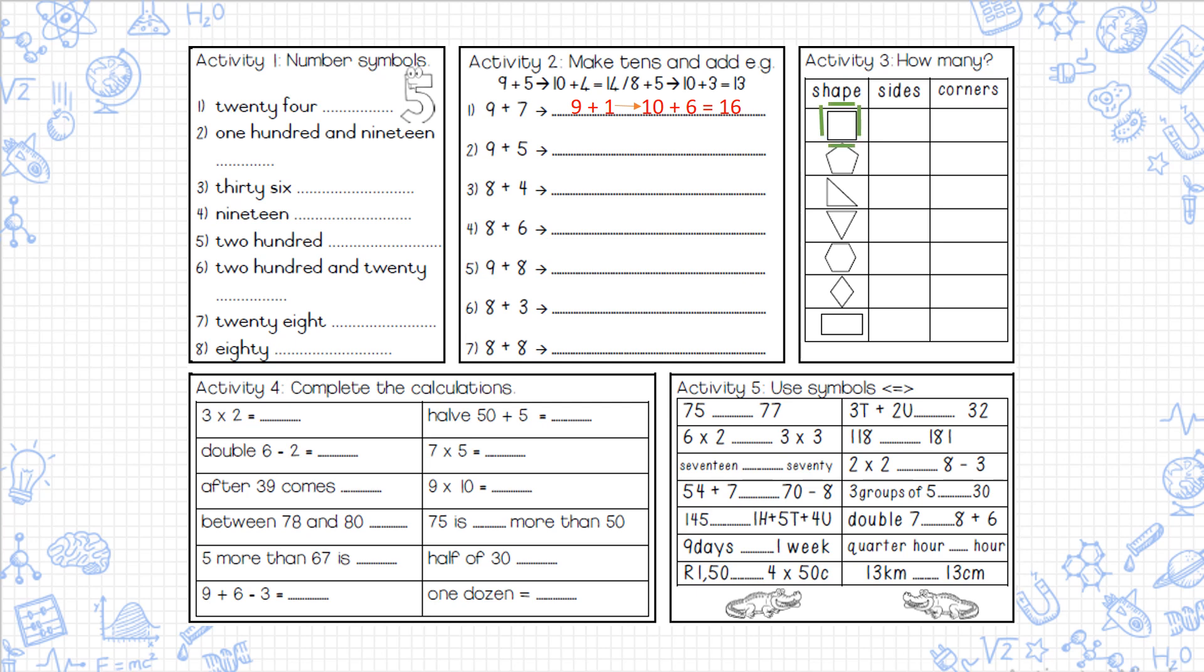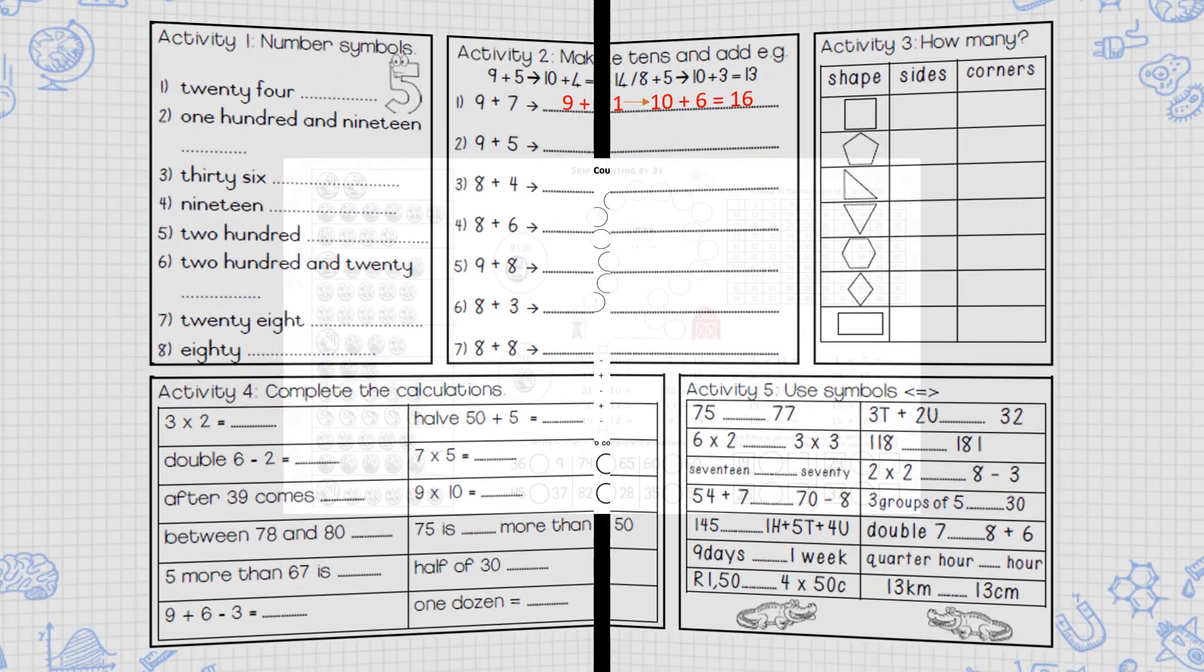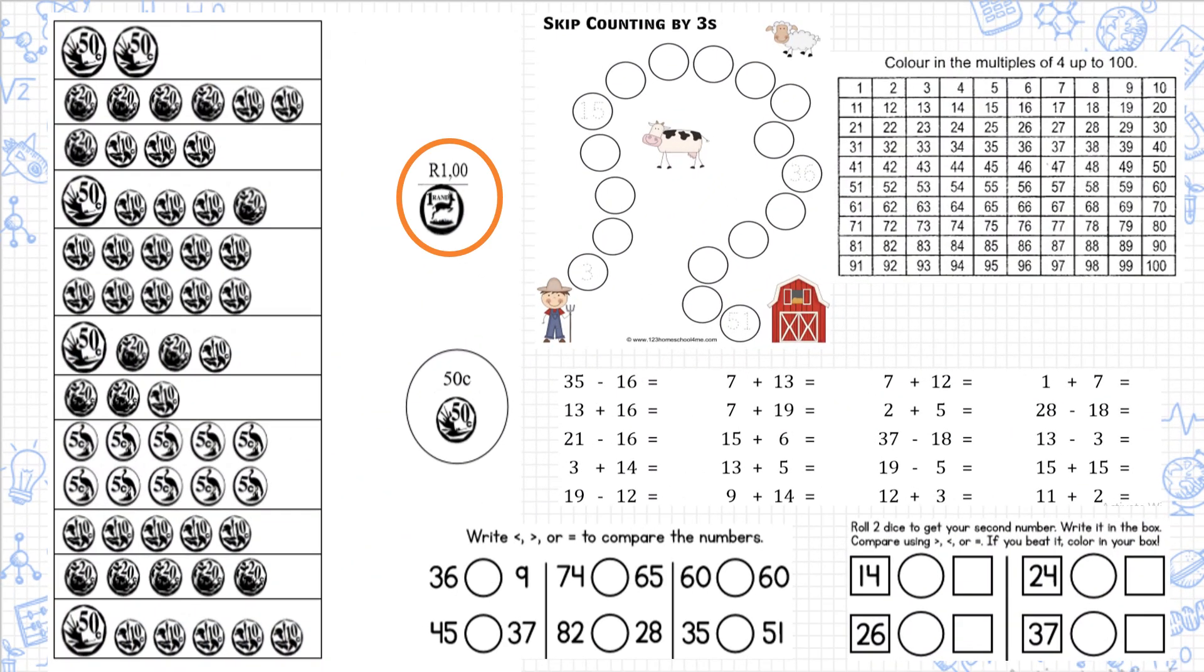For activity 3, you have to tell me how many sides and how many corners each shape has. Activity 4, you have to do calculations. Read the sum carefully and try to do it as fast as you can. Activity 5, you need to use the bigger than, equal to, and smaller than symbols. First go work out what the answer of the sum is, and then you decide what symbol to use.